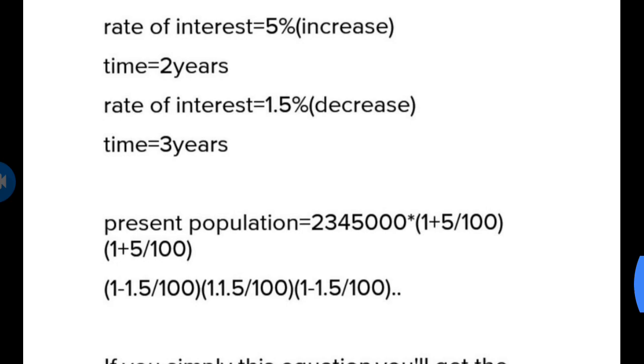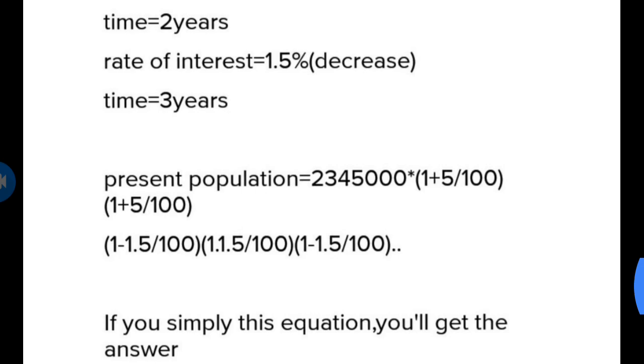Present population equals 2,345,000 times (1 plus 5 upon 100) to the power of 2, times (1 minus 1.5 upon 100) to the power of 3. When we solve that equation, we will simply get our answer.